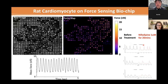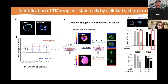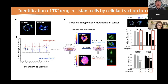Another challenge for anti-cancer therapy is drug resistance — when cells do not respond to drugs and treatment is no longer effective. We discovered that we can use this sensitive force sensing system to detect EGFR-mutation lung cancer cells by looking at their mechanical properties, and there are quite different mechanical properties between sensitive and resistant cells.